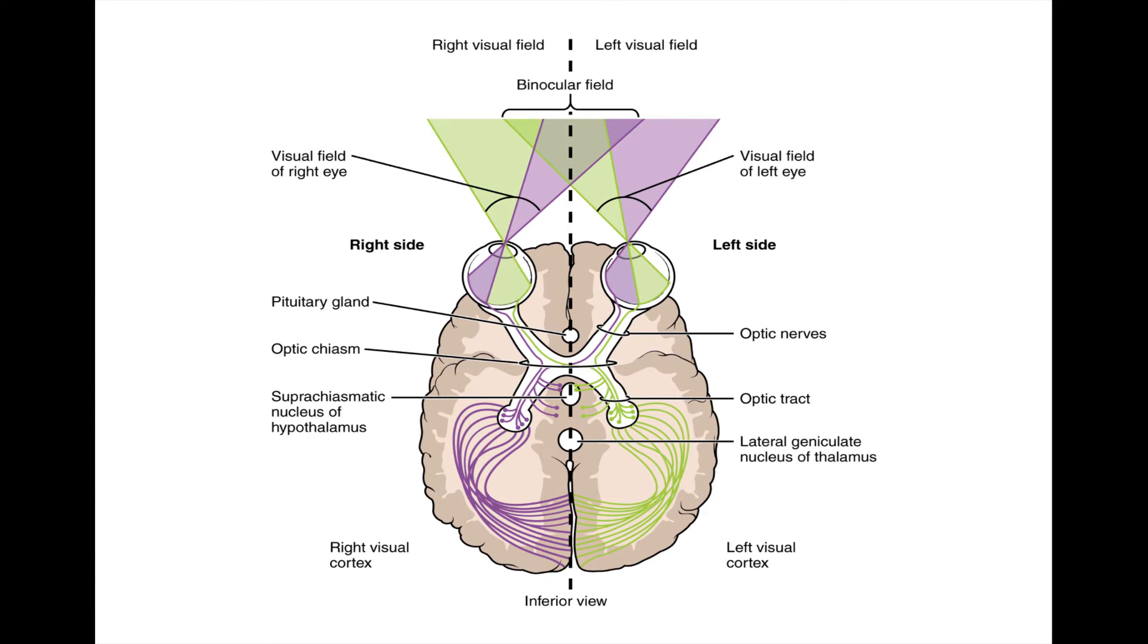To help you put all this information together, let's review what happens when damage occurs at various parts of the visual pathway. Because information travels from the retina to the occipital lobe in an organized way, we can predict the effect on eyesight that any given lesion will have based on its precise location in the pathway.